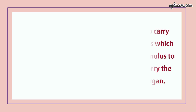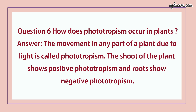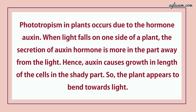Question number 6 says, how does phototropism occur in plants? Answer is: the movement in any part of a plant due to light is called phototropism. The shoot of the plant shows positive phototropism and roots show negative phototropism. Phototropism in plants occurs due to the hormone auxin. When light falls on one side of a plant, the secretion of auxin hormone is more in the part away from the light. Hence, auxin causes more growth in the shady part, so the plant appears to bend towards light.